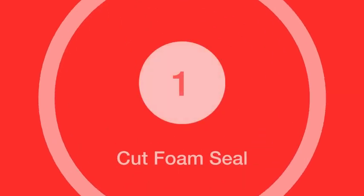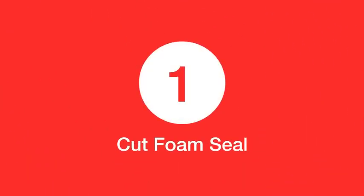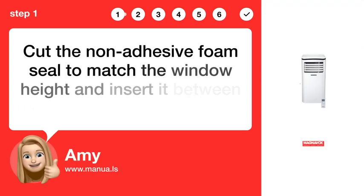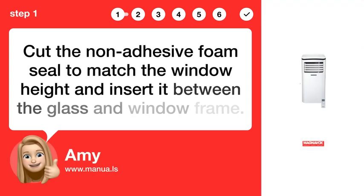Step 1: Cut foam seal. Cut the non-adhesive foam seal to match the window height and insert it between the glass and window frame.